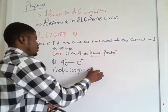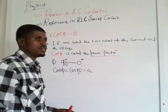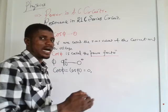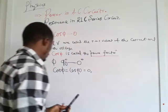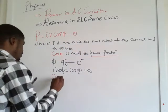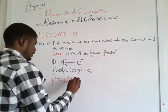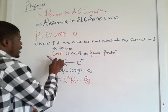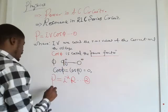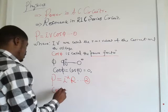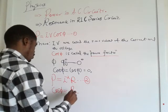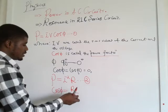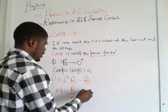However, if the circuit contains a resistor, the root mean square current flows through the circuit, and the power factor cos φ equals R over Z, where R is the resistance in the circuit and Z is the impedance in the circuit. We call this equation number 3.